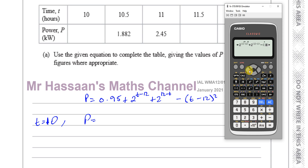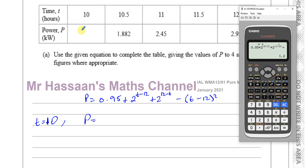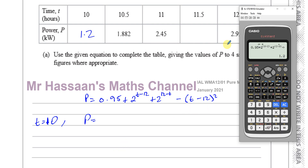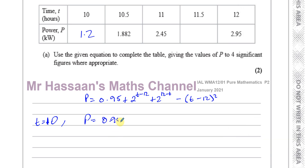So I go to all the places I've got 11 and put 10 in its place. That gives me 6 over 5, which is 1.2. To four significant figures where appropriate — well here it's not appropriate — 1.2 is just 1.2. So when t equals 10, P equals 1.2, from 0.95 plus 2 to the power of minus 2, plus 2 to the power of 2, minus minus 2 squared.